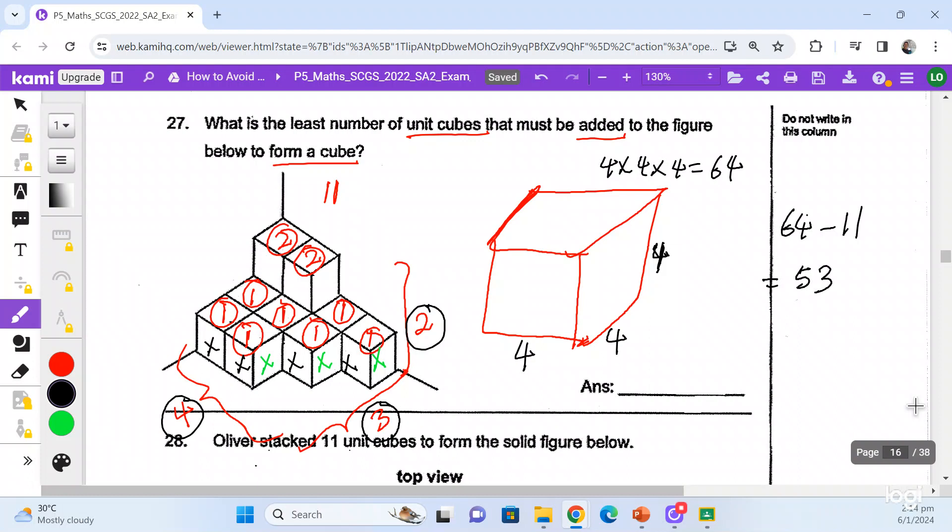So that is how I do this question. So there are a few things that you must know. You must know how to count the cubes correctly, and you must also understand the properties of a cube. A cube has all equal sides, all equal number. And then how do you find how many more? You just have to minus to get how many more to be added. So this kind of question, if you understand...